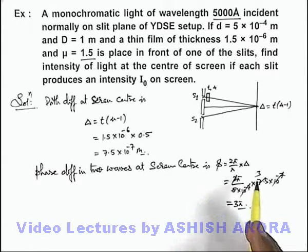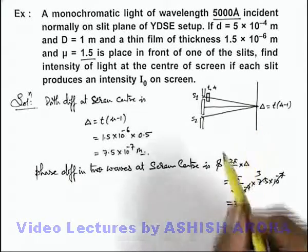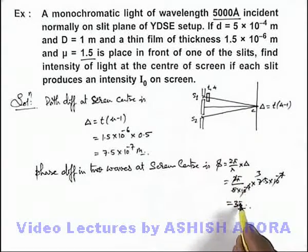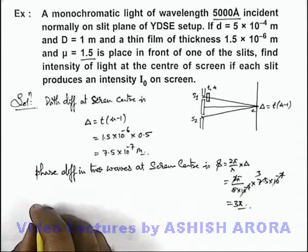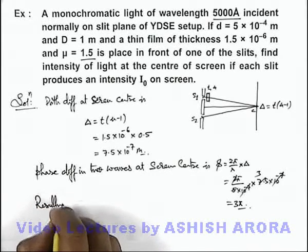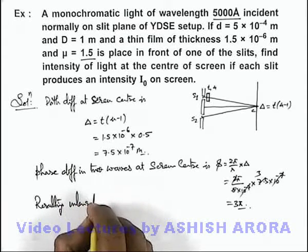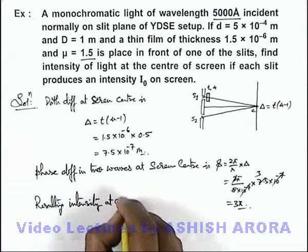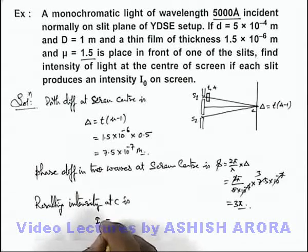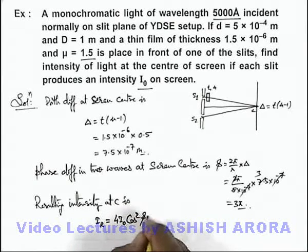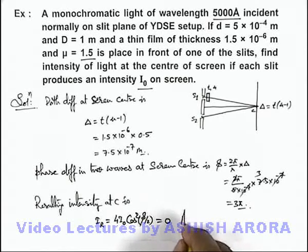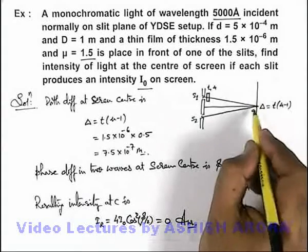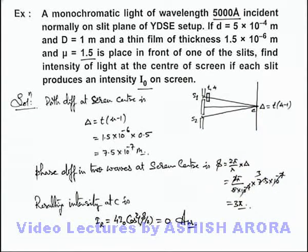Now we can directly infer that if the phase difference at the center of the screen is 3π, the waves will interfere destructively. The resulting intensity at center is given by 4I₀ cos²(φ/2). Substituting φ = 3π, we get cos²(3π/2) = 0. So the intensity is zero — at the center there will be a dark fringe and no intensity will be produced.